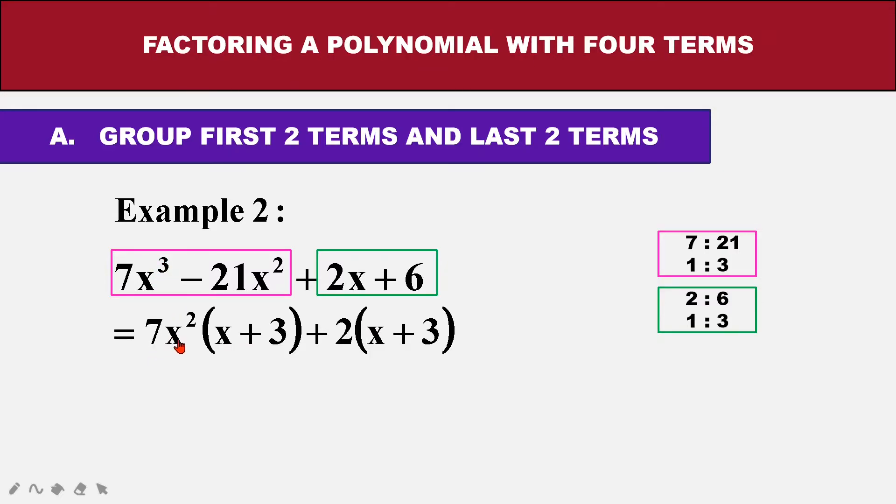So I have 7X cubed, so I can factor out 7X squared. Then I will get X plus 3. Then for the second part, I factorize out 2 and I will have X plus 3. So X plus 3 can be factorized out. So what is balance is 7X squared, I write there, and plus 2, I write here. So my factor is ready.